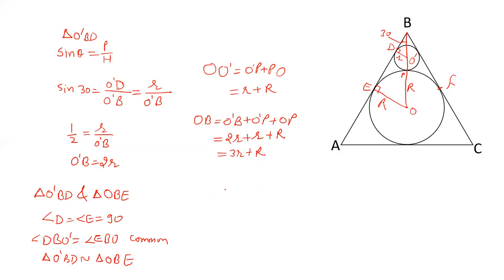And if these two triangles are similar the ratio of their sides are equal. Corresponding sides are O'D and OE. This side and this side. And O'B and OB. Now O'D is smaller r. OE is capital R. O'B we have calculated is 2r. And OB is equal to 3r plus R.